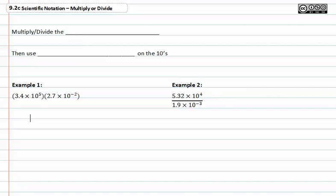Many times we'll be asked to multiply or divide numbers that are in scientific notation already. When we multiply or divide the numbers, we use exponent properties on the tens.